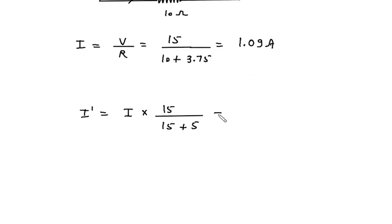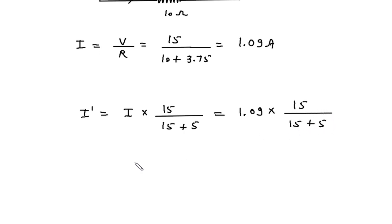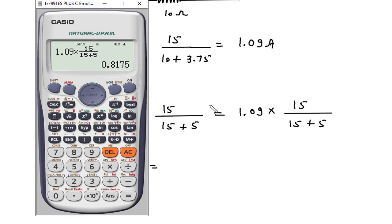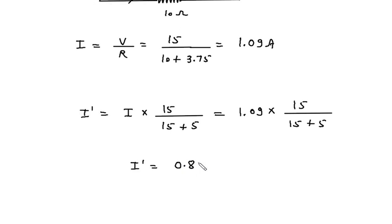I prime is equal to total current. The total current value is 1.09 into 15 divided by 15 plus 5. So I prime is equal to 1.09 into 15 divided by 20, which gives 0.817 ampere.